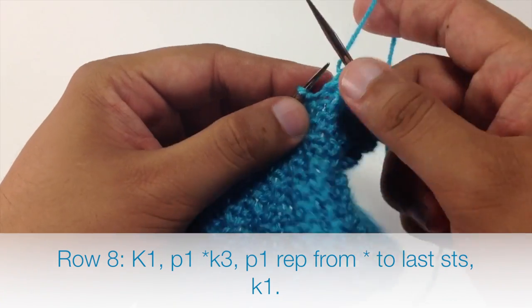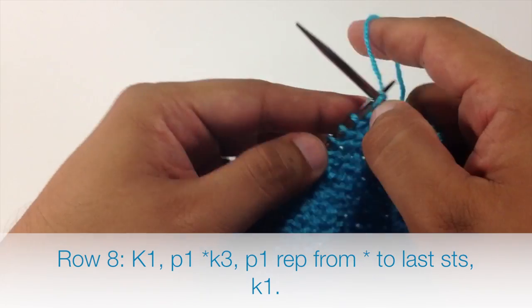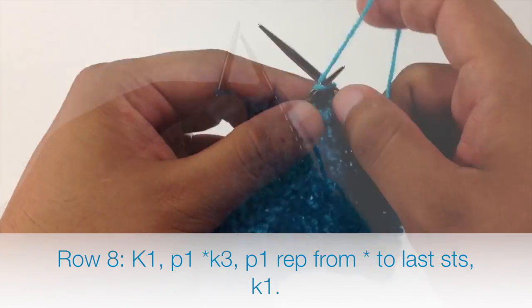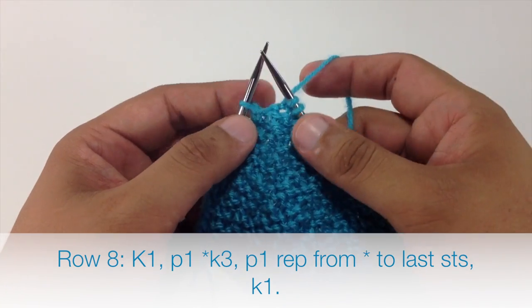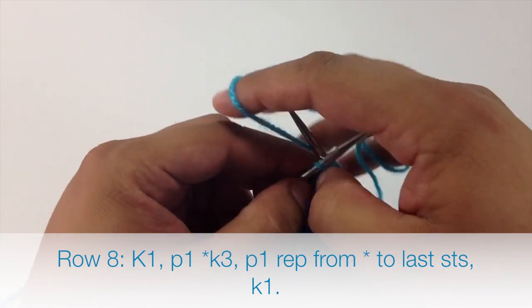So we will continue that sequence until the last stitch in the row. When we reach the last stitch in the row we are just going to knit 1.